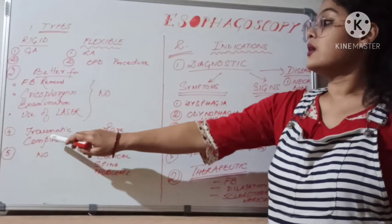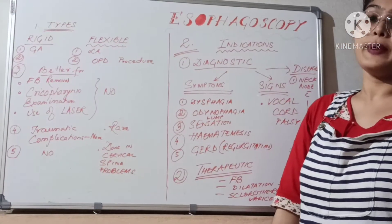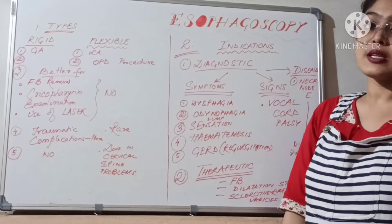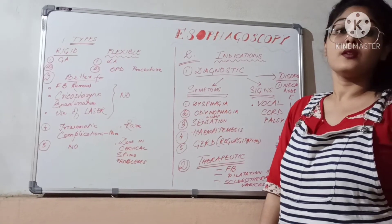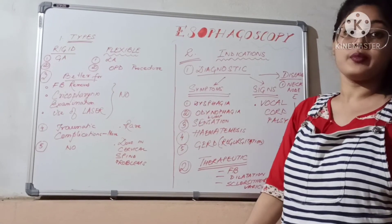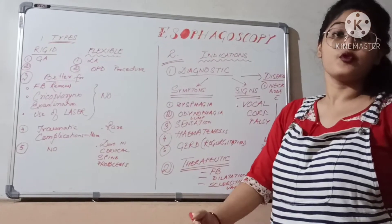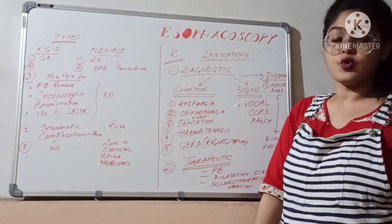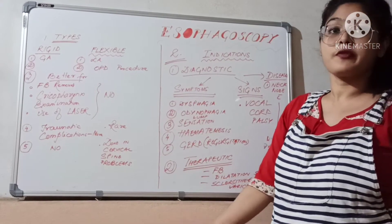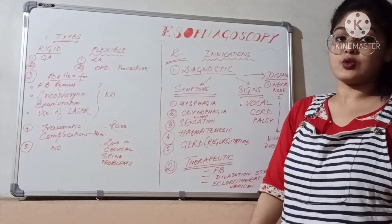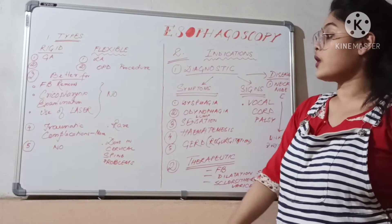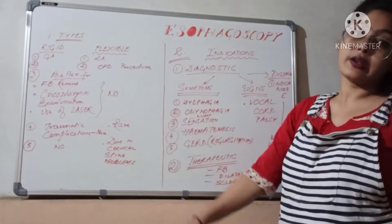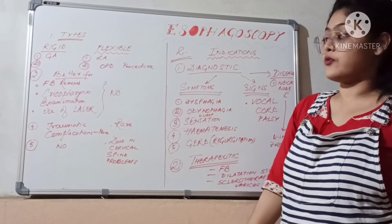There are some traumatic complications with rigid esophagoscopy, such as tears while pushing the rigid esophagoscope, and there could be perforation of the esophagus. These complications are very rare in flexible esophagoscopy.